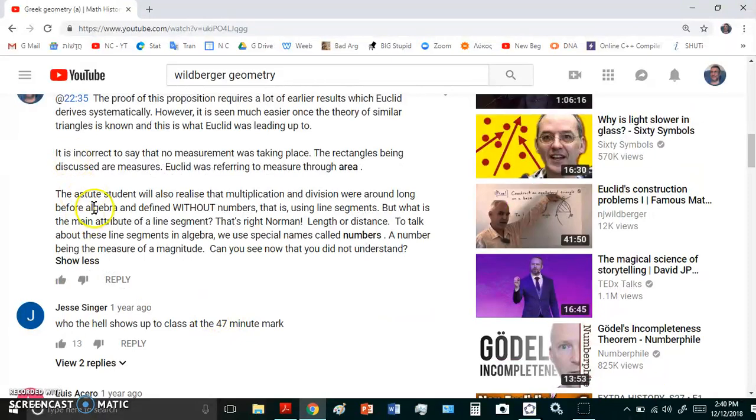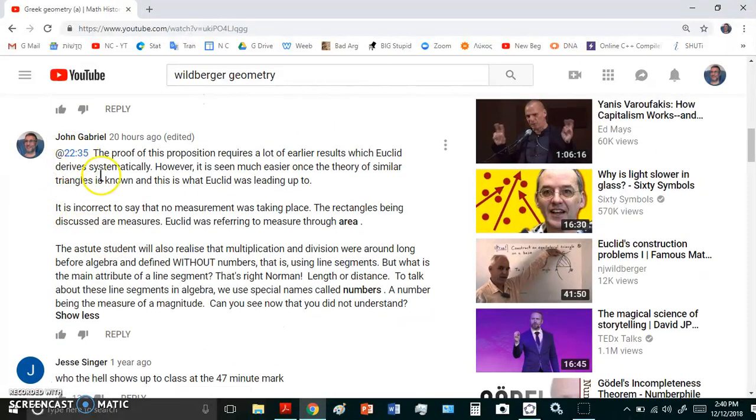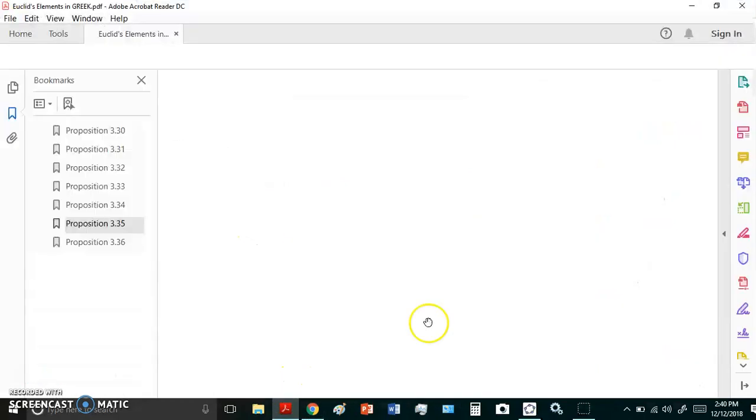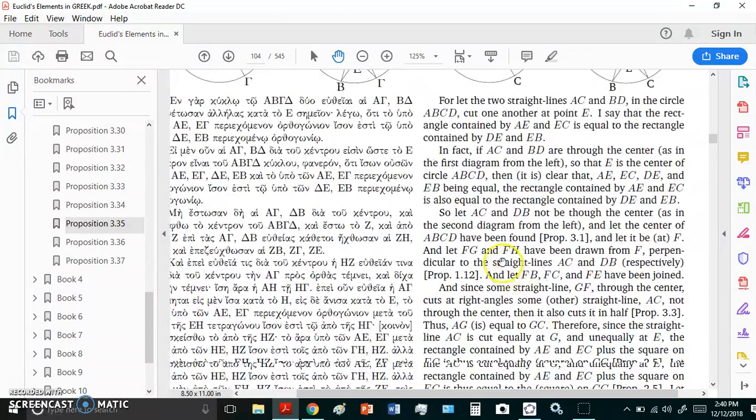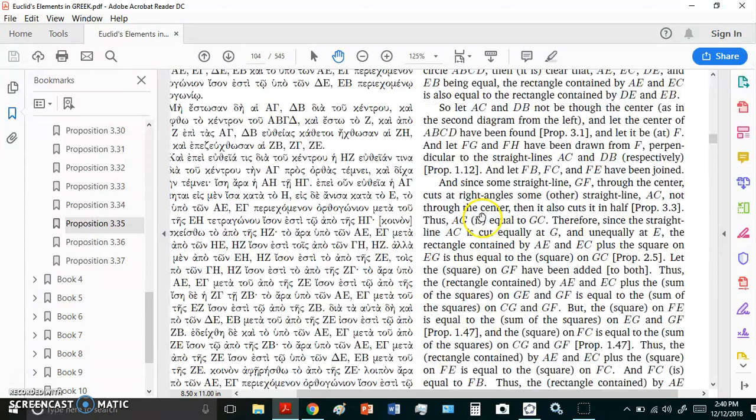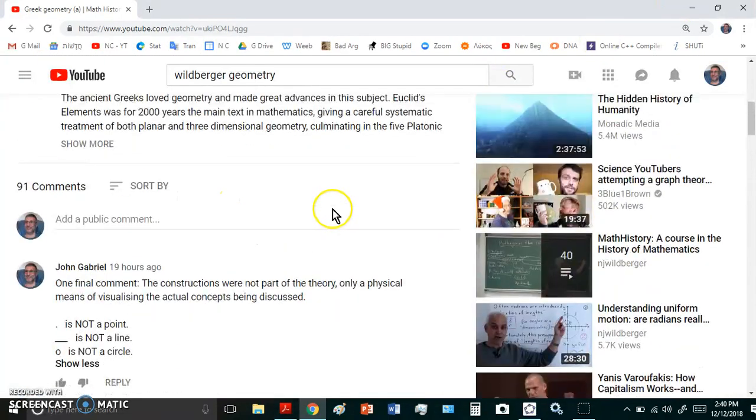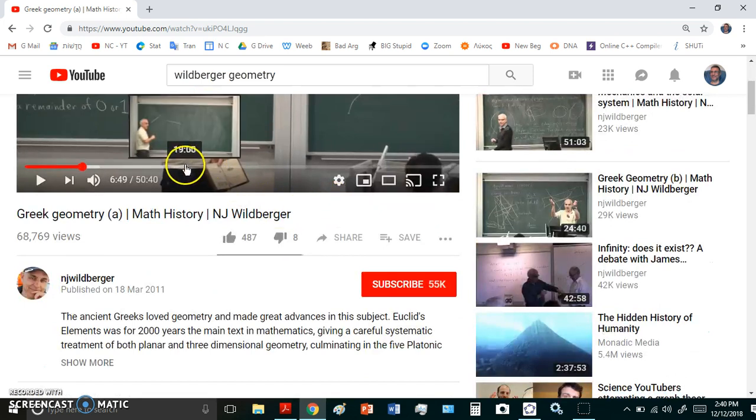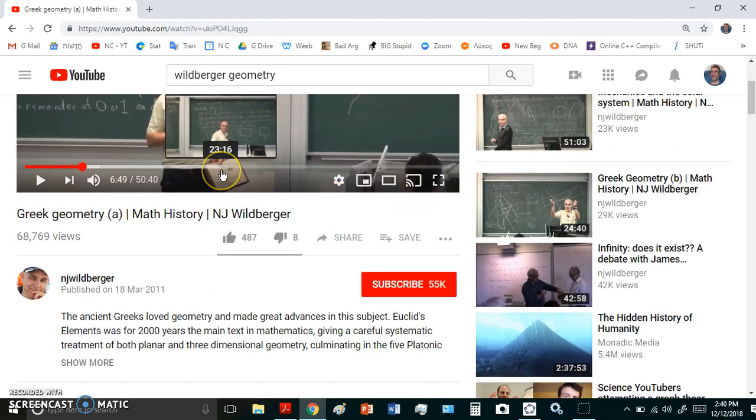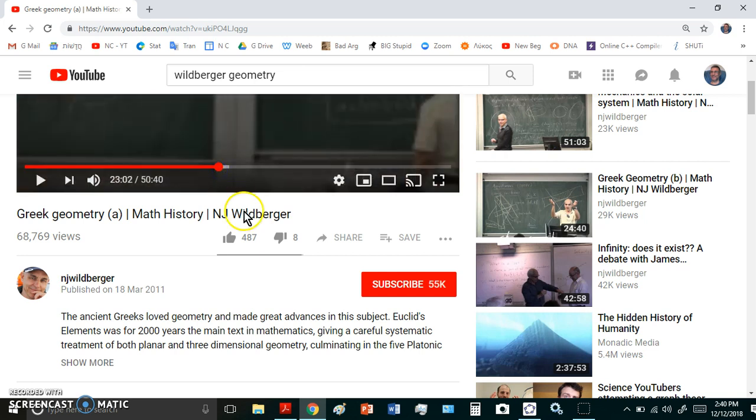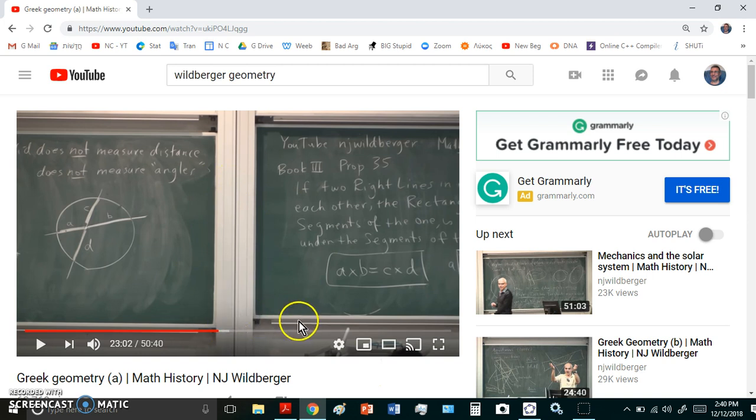The next problem occurs, or the next thing I noticed, occurs at 22 minutes and 35 seconds. And this is the proof of the proposition that I showed you earlier, this one here, proposition 35. Now Euclid goes to great lengths to prove this. However, it's very easy to prove this proposition using similar triangles. And let me just quickly go to 22:35. Okay, so at this particular point, Wildberger says that the Greeks didn't actually know about multiplication. He's wrong.